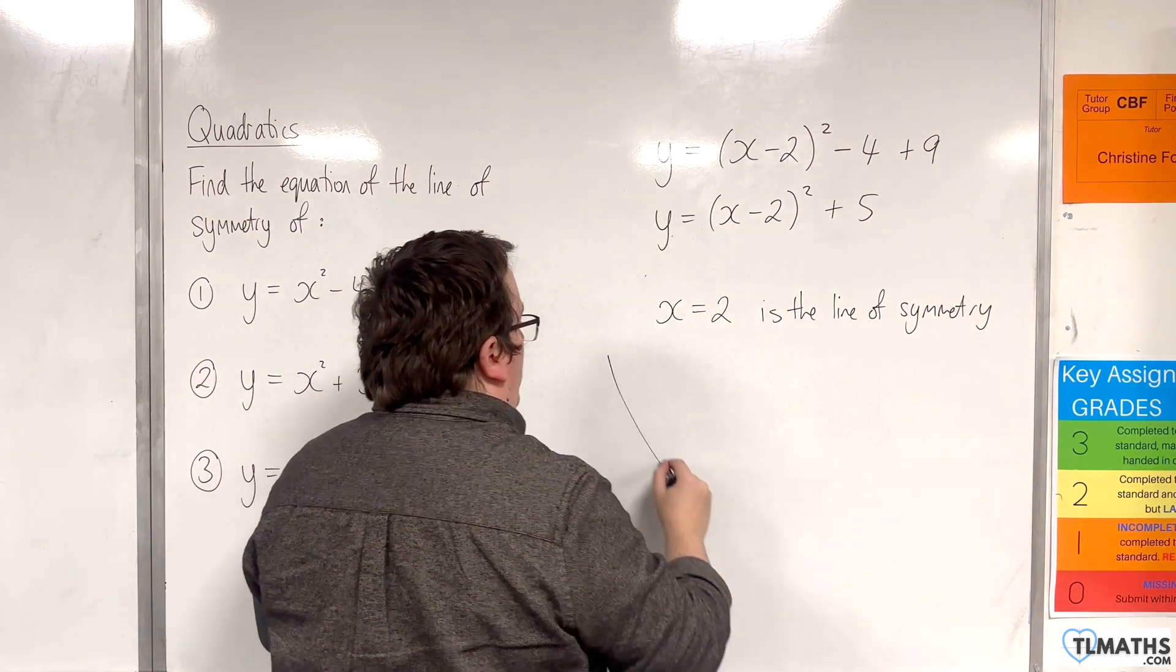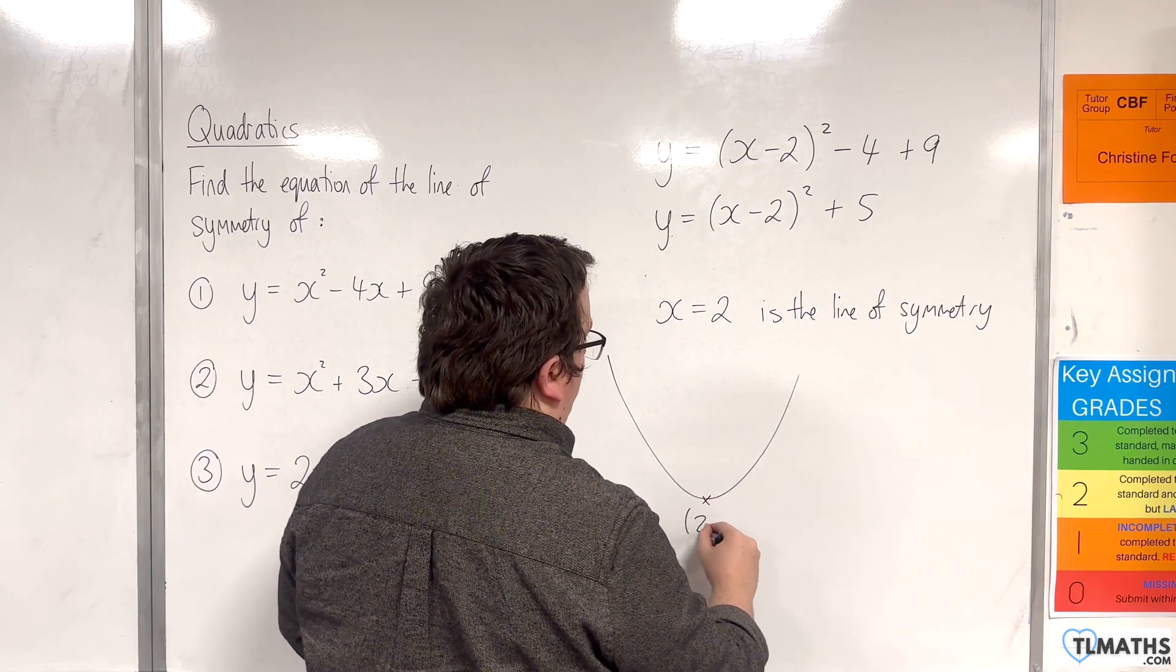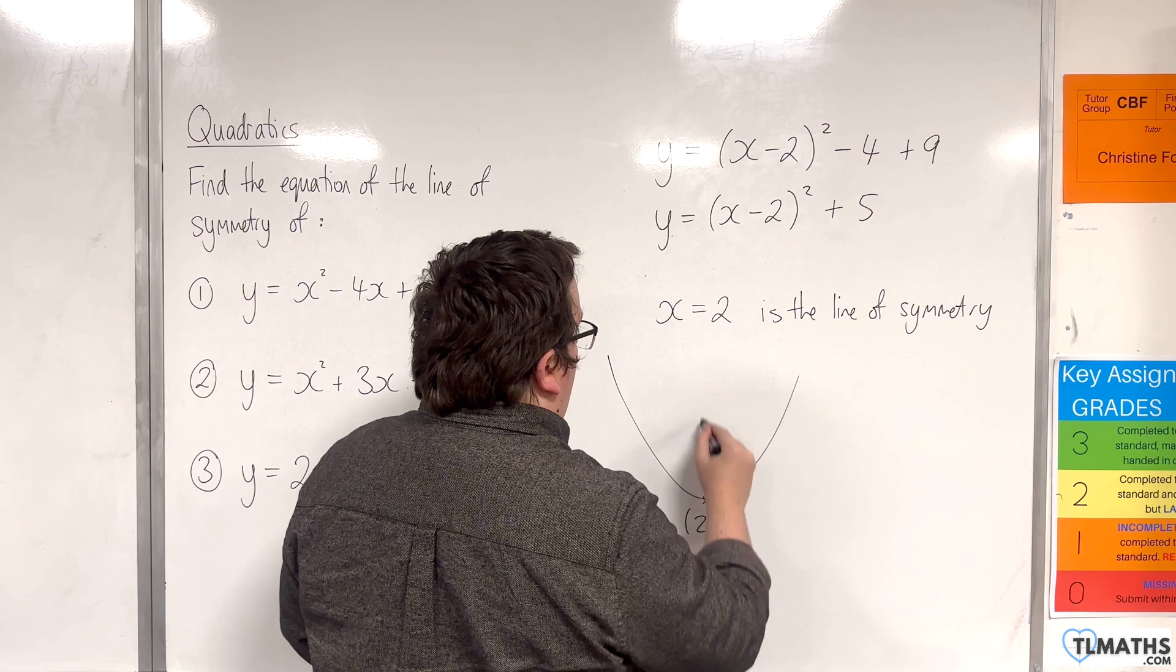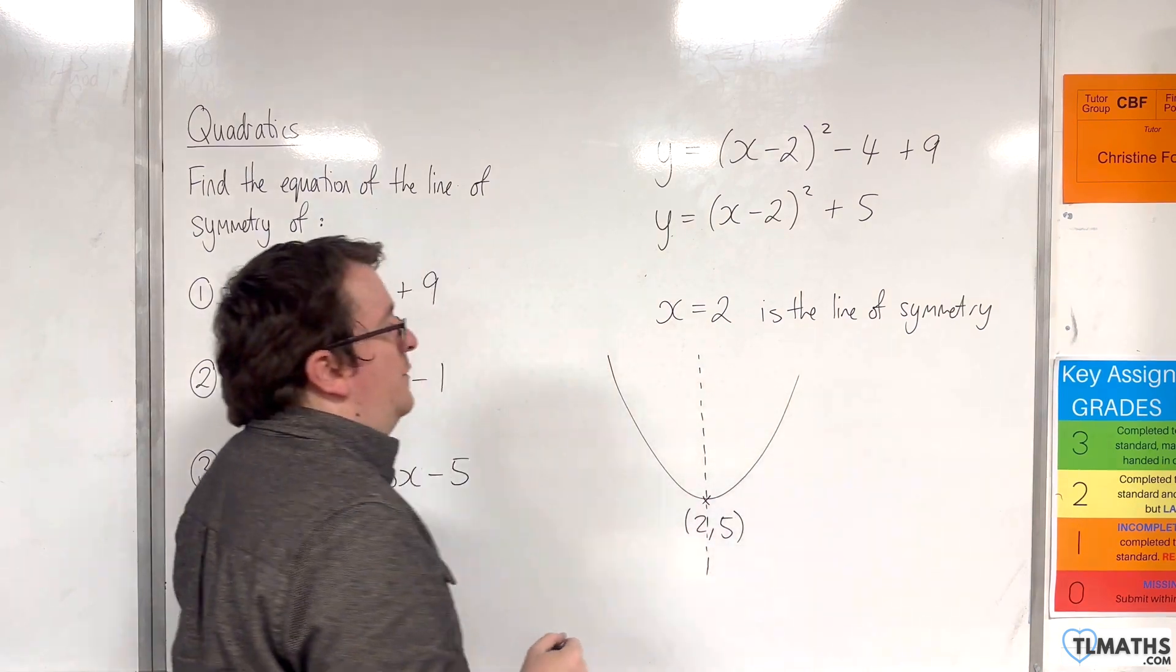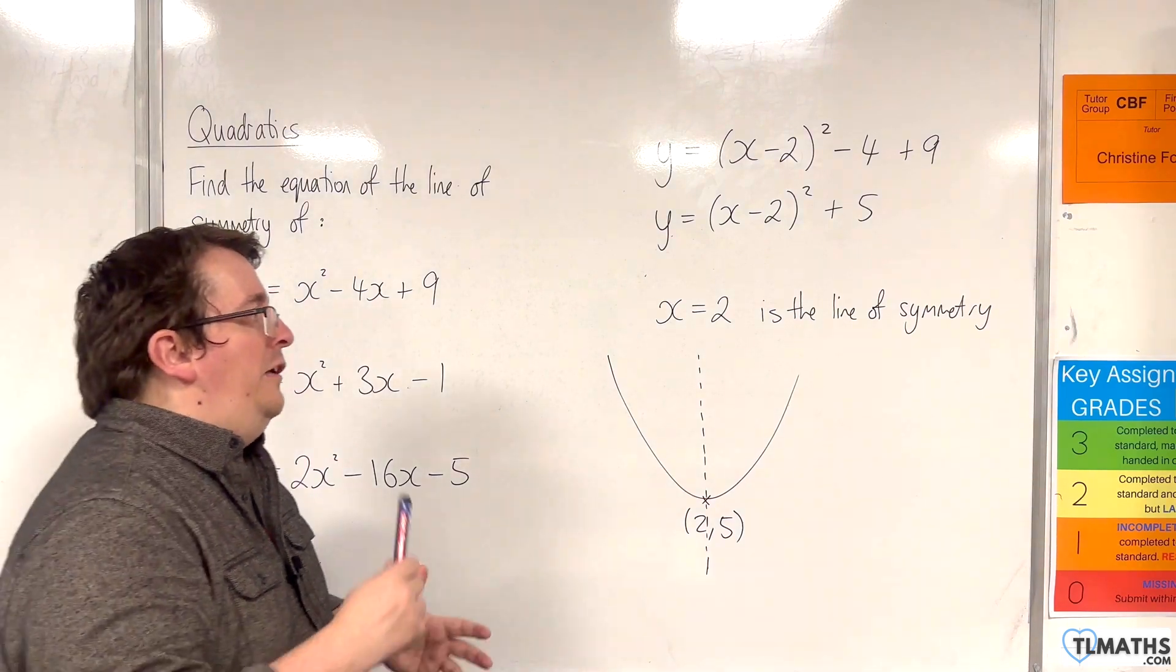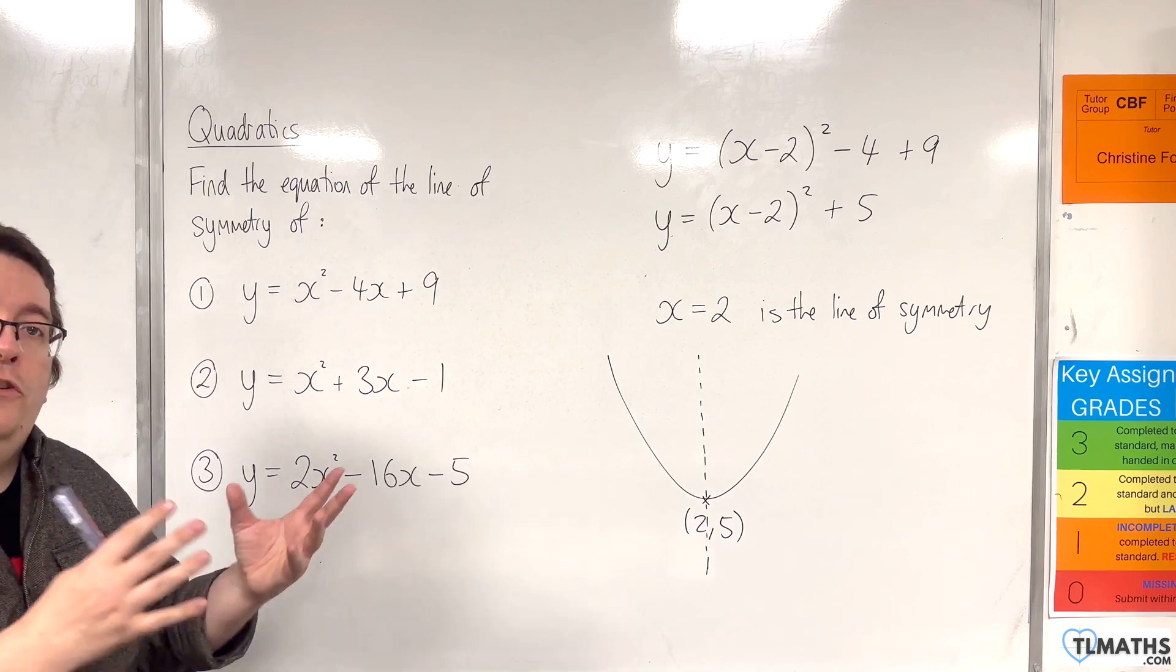Now the reason for that is that we have a parabola here, where the vertex we've just worked out is at 2, 5, and the line of symmetry is that line there, and that will have equation x equals 2. So it will always be x equals the x-coordinate of your vertex.